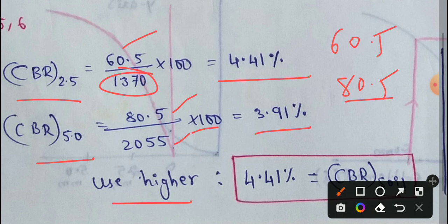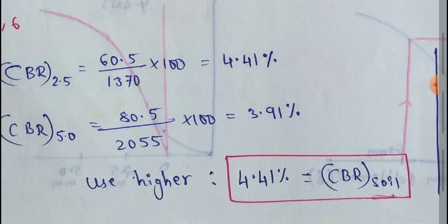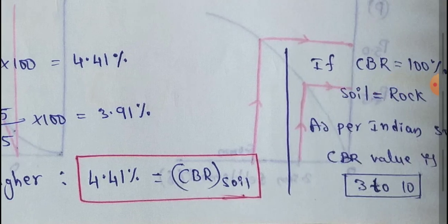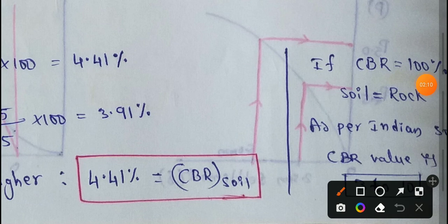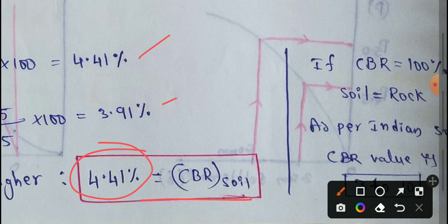We compare CBR 2.5 with CBR 5.0. The CBR 2.5 value is 4.41%. Since this is the higher value among CBR 2.5 and CBR 5.0, we take 4.41% as the final CBR value.